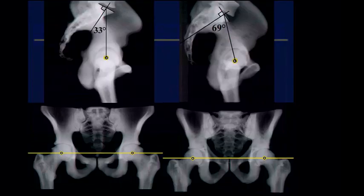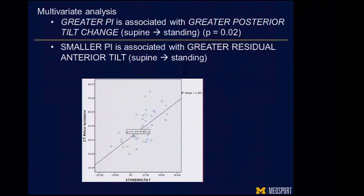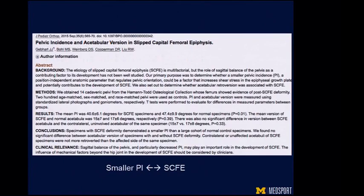Looking at a typical case with these two patients of different pelvic incidence, the one with decreased pelvic incidence has a mild crossover sign, while the high pelvic incidence is much more anteverted. When controlling for other factors, greater pelvic incidence was associated with greater posterior pelvic tilt change from supine to standing, and the opposite holds as well. This aligns with literature from Cleveland showing smaller pelvic incidence relating to pincer and CAM morphologies, as well as SCFE literature showing smaller pelvic incidence in SCFEs compared to normal controls.